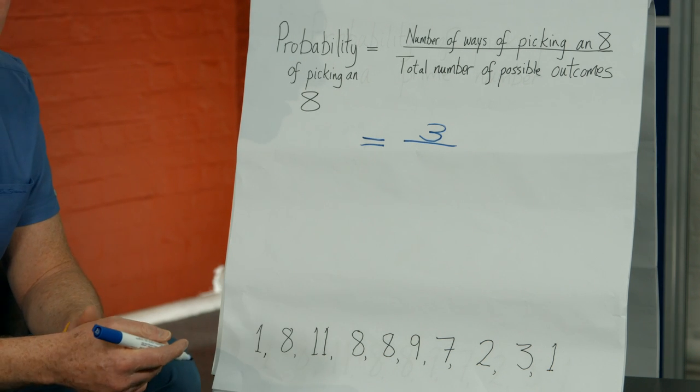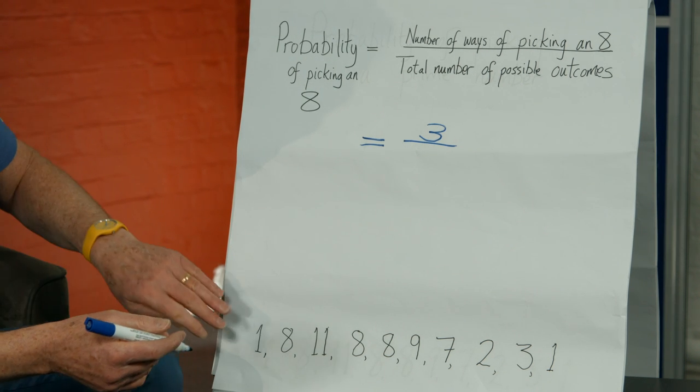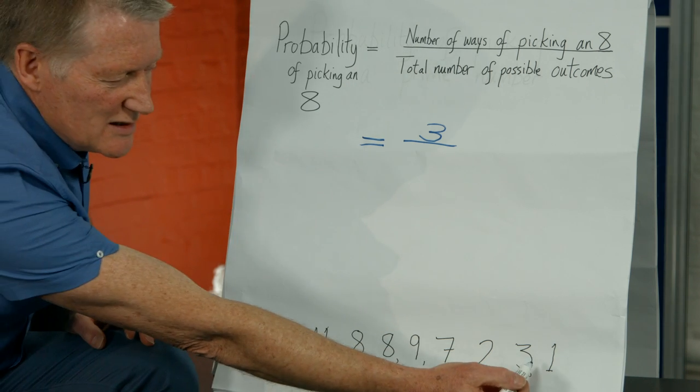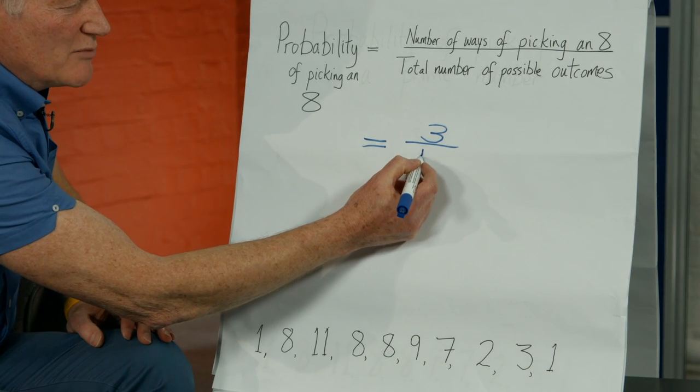And the total number of possible outcomes, well, that's 10. There are 10 numbers in this list. So that becomes the denominator.